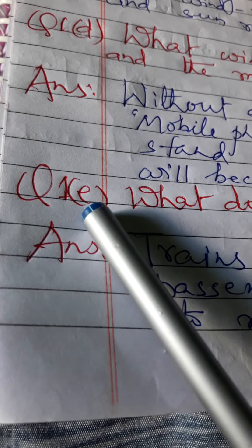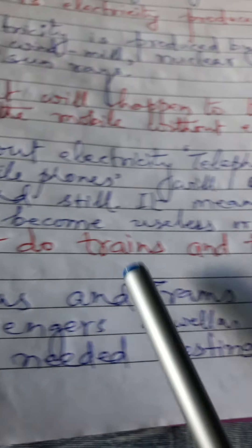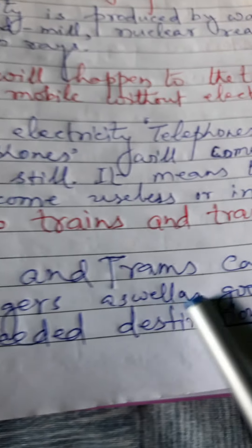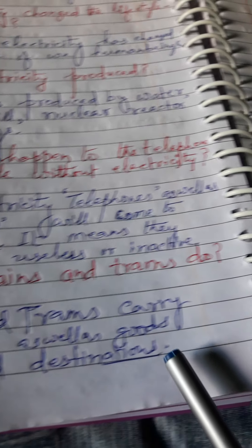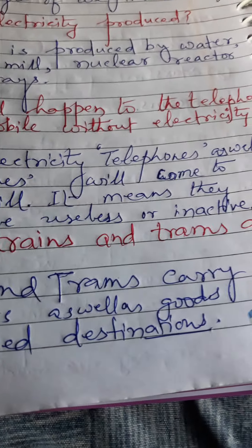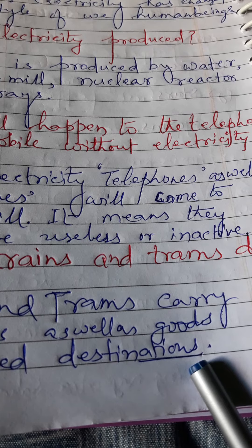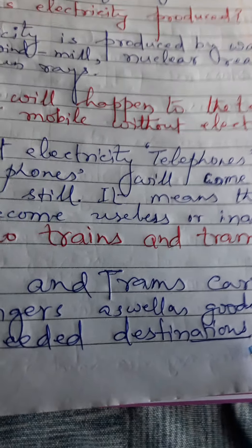Question 1e: What do trains and trams do? Trains aur trams kya karte hain? Answer: Trains and trams carry passengers as well as goods to needed destinations. Trains aur trams yatrigon tatha unke samaan ko avashyak gantavya tak pahunchate hain.